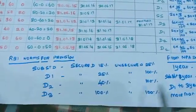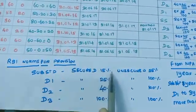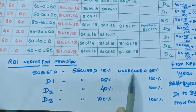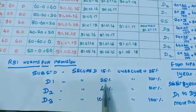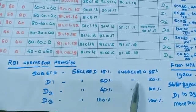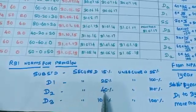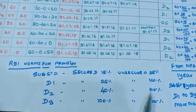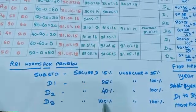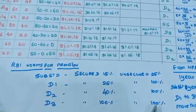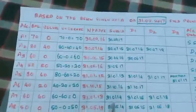The provisioning norms are: for substandard category, secured portion 15% provision and for unsecured portion 25%. For D1 category, secured portion 25% and unsecured portion 100%. For D2 category, secured portion 40% and unsecured portion 100%. For D3, secured portion 100% and unsecured portion is also 100%. Here we are going to discuss about a problem.